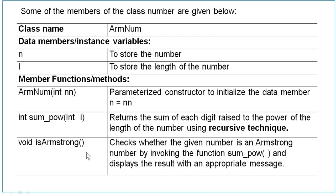From isArmstrong, you are going to invoke sumPower — you are not going to invoke it from the main function, but from isArmstrong. After whatever value is returned, you are going to check whether it is equal to the input and display the appropriate message.